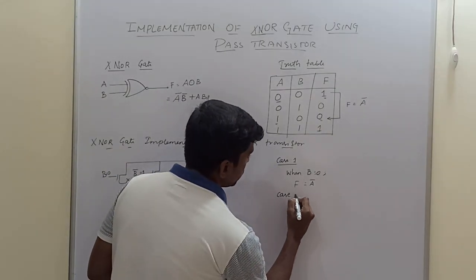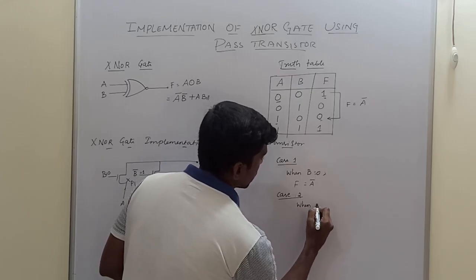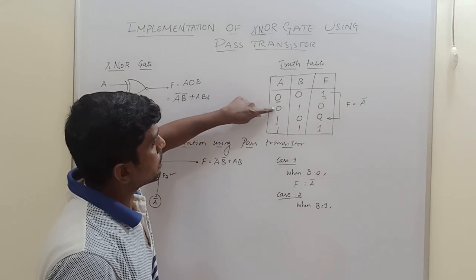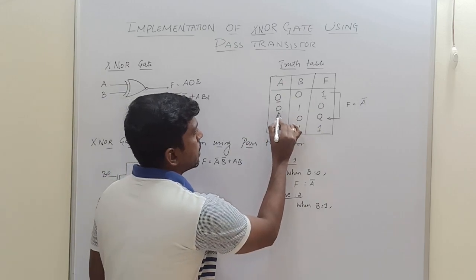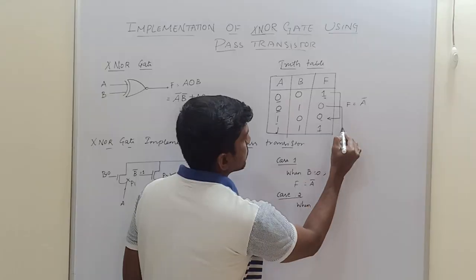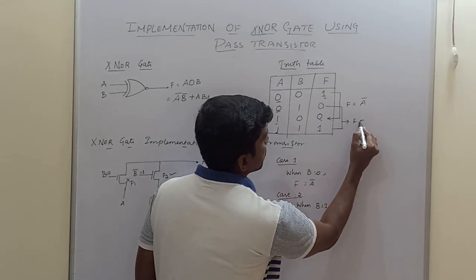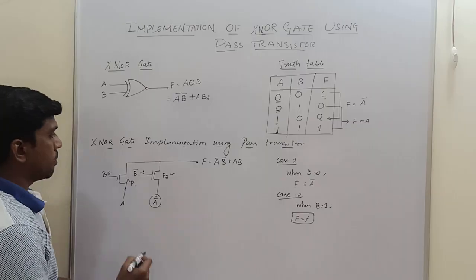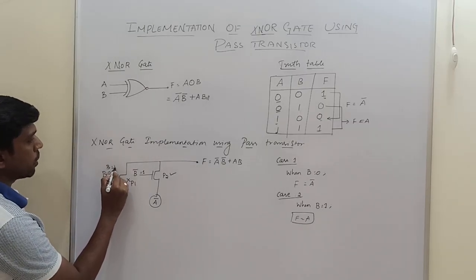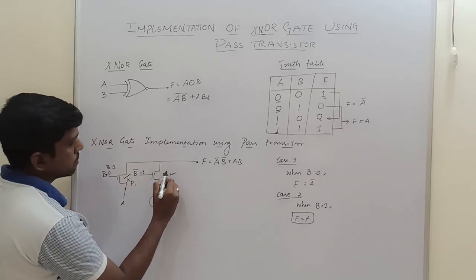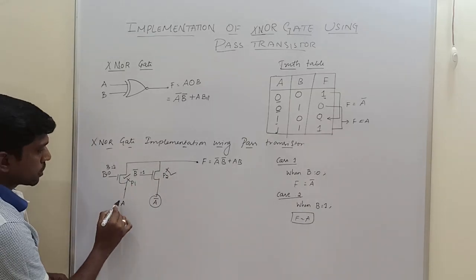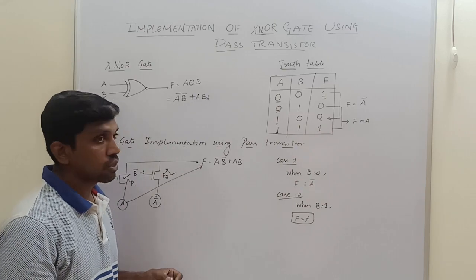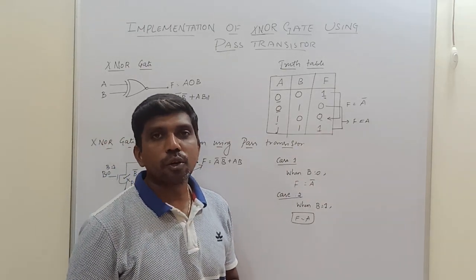Case 2: When B equals 1, A is copied to the output. Whatever value is present in A, this value is copied to output, so F equals A. When B equals 1, pass-transistor P1 is turned off and pass-transistor P2 is turned off, so whatever value is present in A is copied to F. This completes the XNOR gate implementation using pass-transistor logic. I hope you understand the concept.